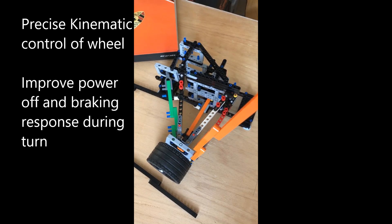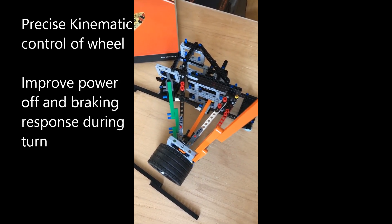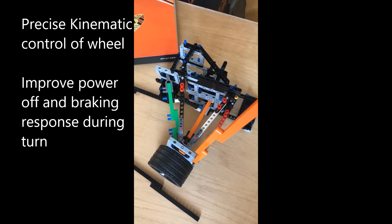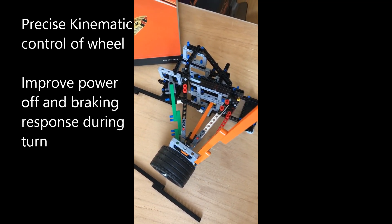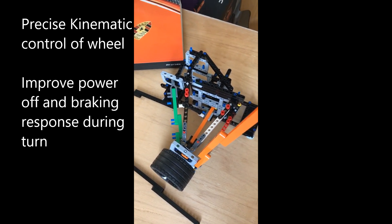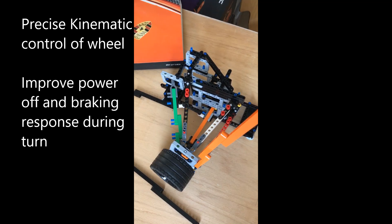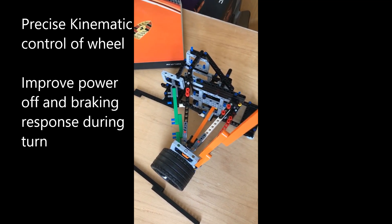What Porsche had always been worried about is what the 911 would tend to do if in a turn there was a lift off or a braking maneuver, which would upset the balance of the car and the car would tend to rotate into oversteer. So this axle was designed to counter the possibility of lift off or braking in turn.